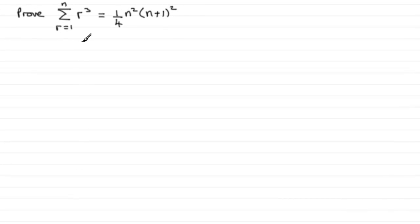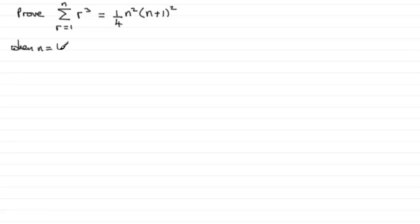We've got to show that the sum of r cubed going from r equals 1 to r equals n is equal to a quarter times n squared times n plus 1, all squared. To do this in the usual way, we need to show that it's true for when n equals 1 as the first step. So when n equals 1, the left hand side is equal to the sum of r cubed going from r equals 1 to 1. In other words, we've just got one single term: 1 cubed, which is obviously 1.